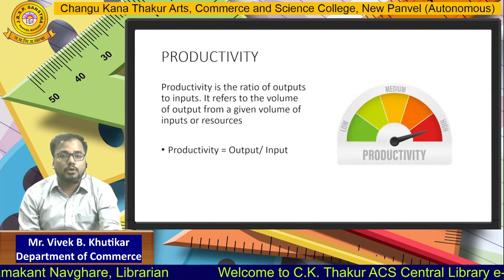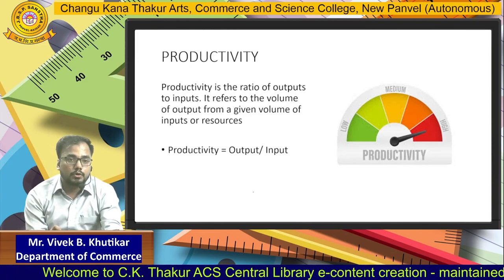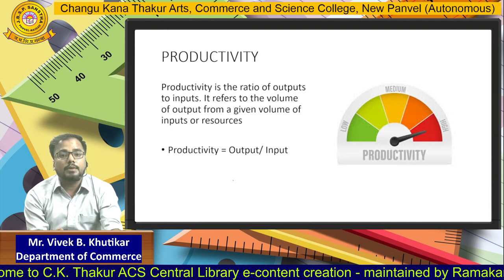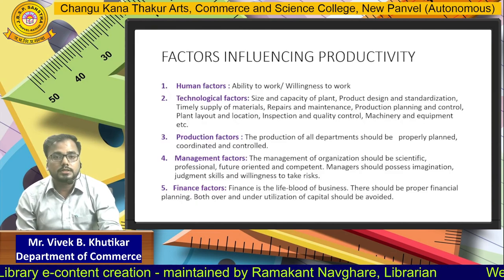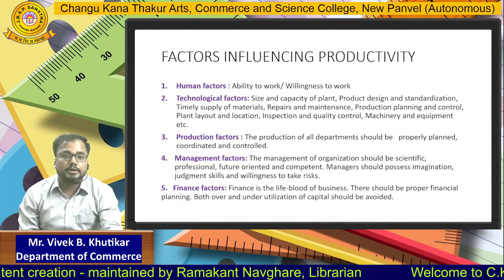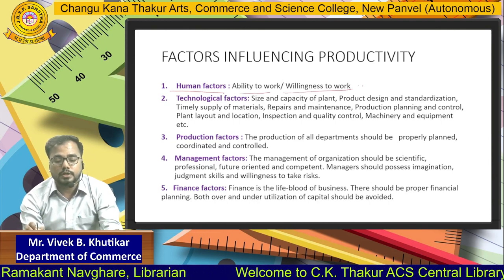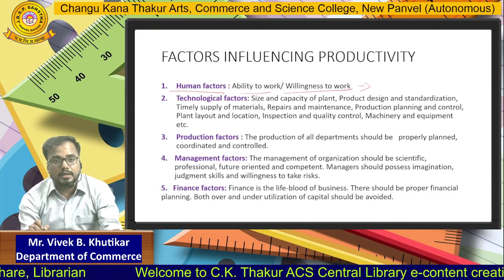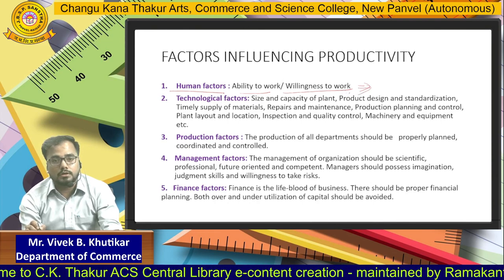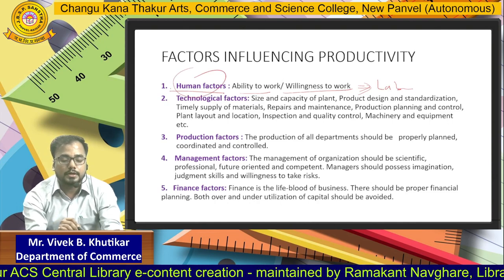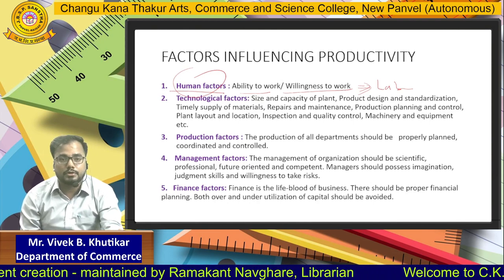Next topic is Productivity. Productivity is nothing but the ratio of Output to Input. Whatever raw material or inputs we have assigned, and with the help of that material, the number of quantitative outputs we deliver — that is Productivity. Now, Factors Influencing Productivity: the first factor is the Human Factor. In Human Factor, both Ability to Work and Willingness to Work are considered. At the end, who is the key element in the factory to produce the goods? It is the Labour. Labour's Ability and Willingness to Work affects the Productivity of the Production Department and ultimately the Productivity of the Organization.